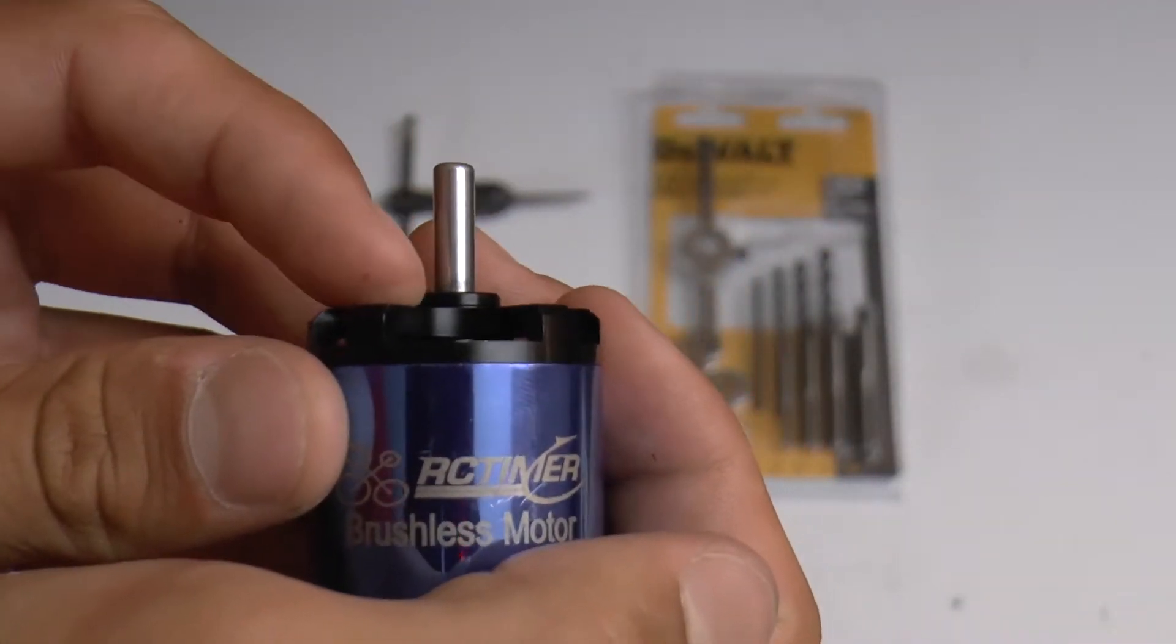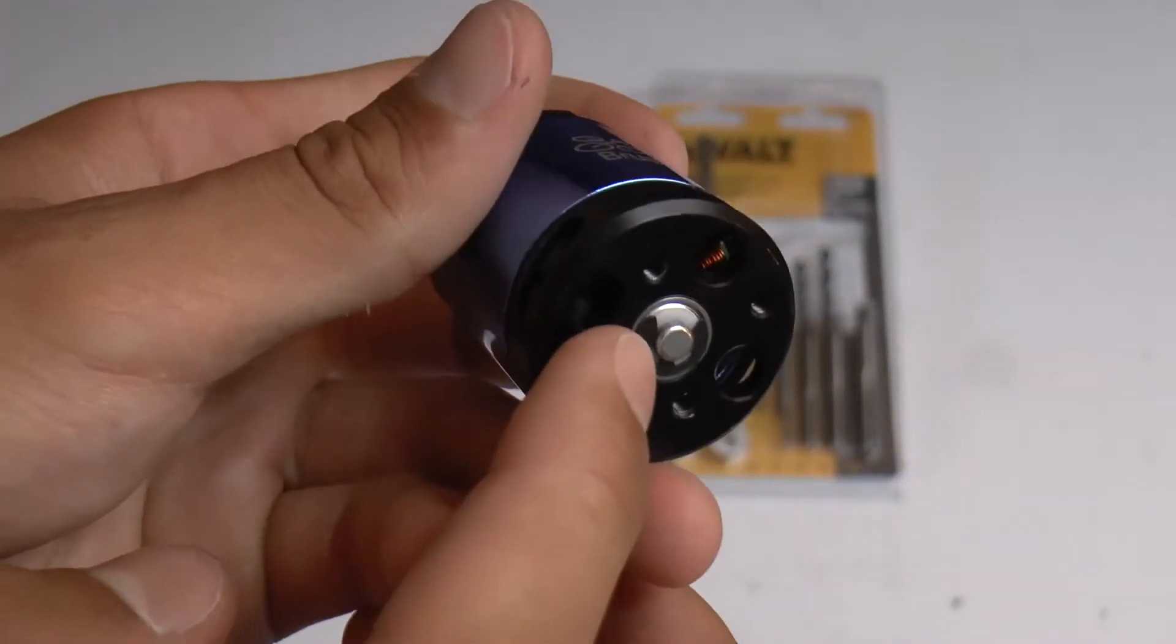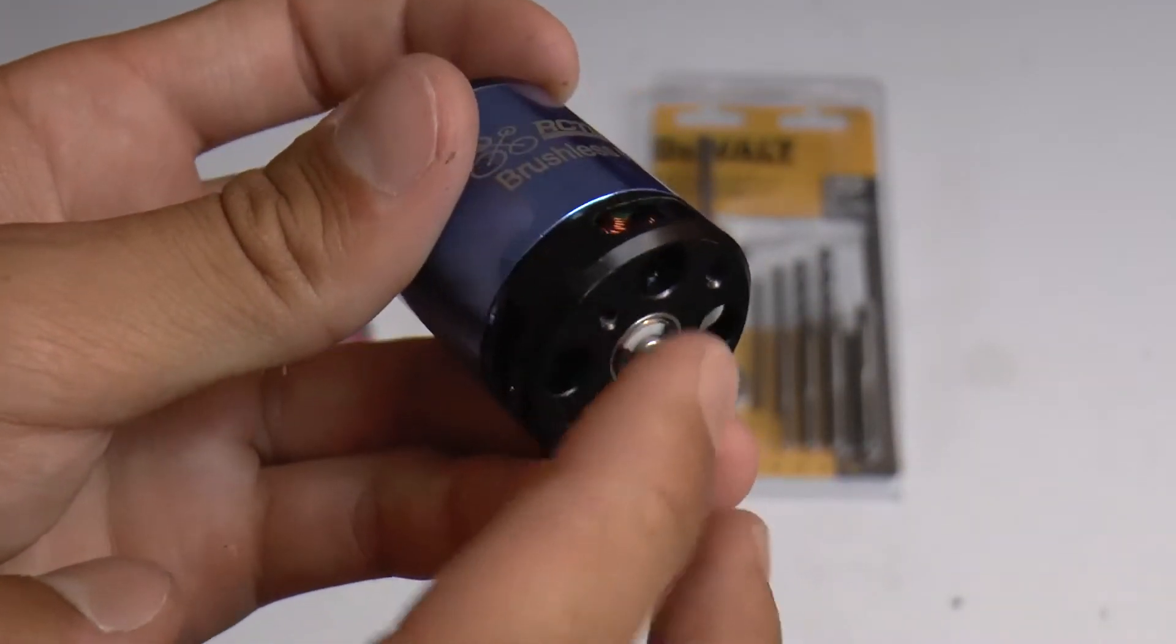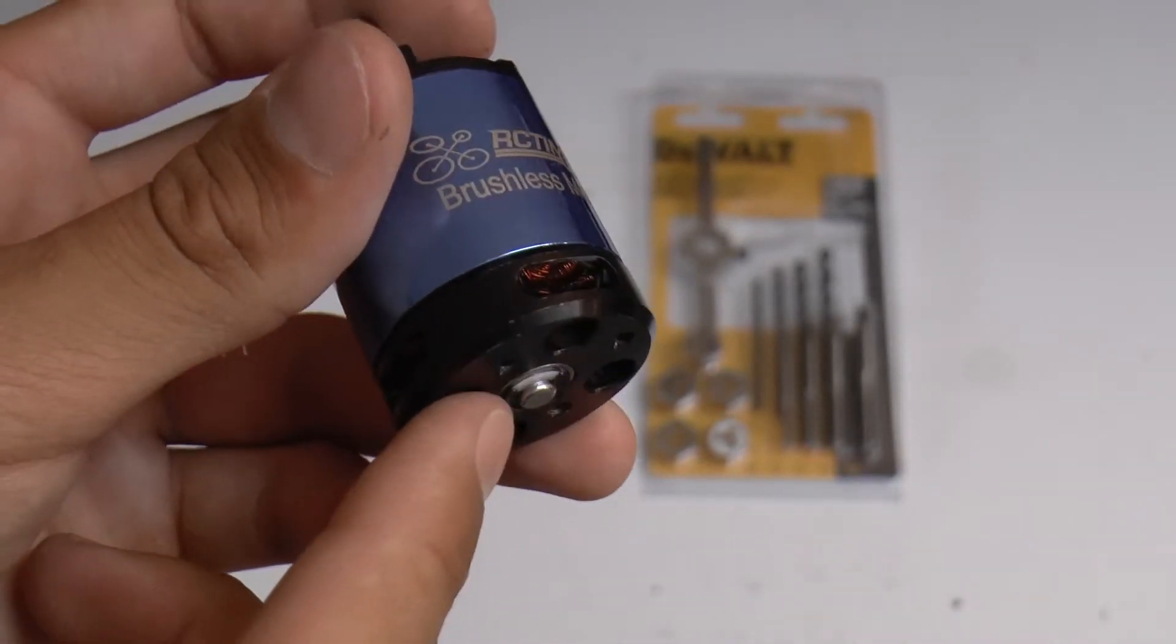Now at this point the grub screw will be removed so the shaft should be free, but if it's not, what you're going to need to do is remove the clip or pin that holds down the shaft on the bottom of the motor.